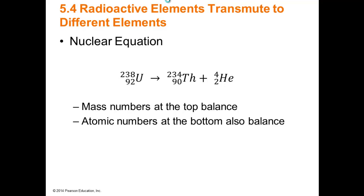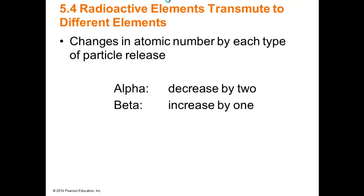What really matters with nuclear equations is that they're balanced. For uranium alpha decay: 234 plus 4 gives you 238 for mass numbers, and 90 plus 2 gives you 92 for atomic numbers. You're not losing mass or protons — they're going somewhere, following the law of conservation of mass. In summary: alpha decay decreases the atomic number by two; beta decay increases it by one. For multiple choice questions, if uranium undergoes beta decay, find uranium on the periodic table and move one element to the right. For alpha decay, move two elements to the left.